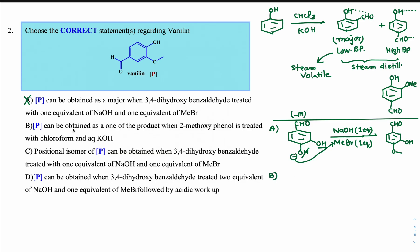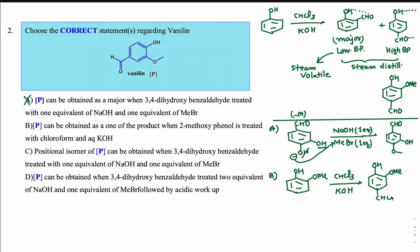Option B: 2-methoxyphenol treated with CHCl3 and KOH — this is the Reimer-Tiemann reaction. The ortho position is substituted by the methoxy group, so CHO can come on the para position, giving vanillin as one of the products. Yes, vanillin can be obtained as one of the products of this Reimer-Tiemann reaction. Option B is absolutely correct.